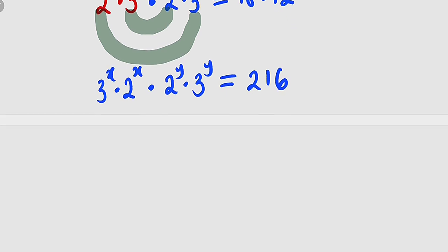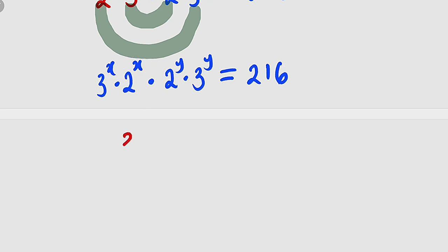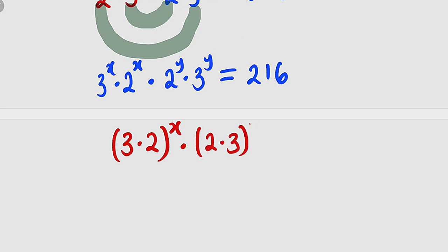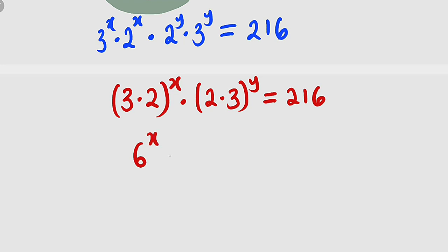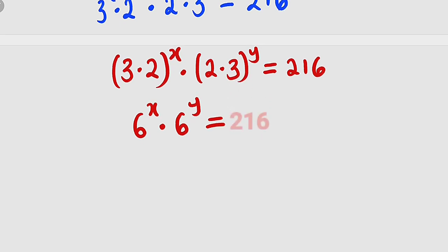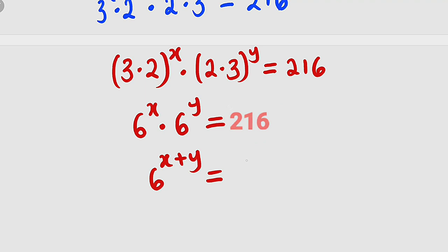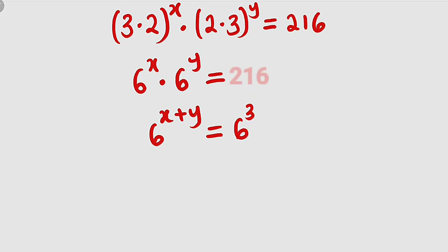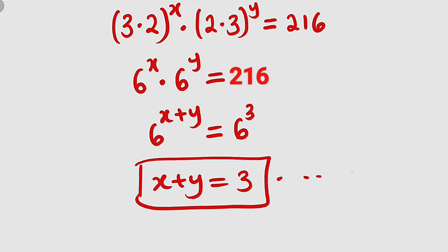Now let us apply one of the laws of indices. We have equal exponents, so we take 3 multiplied by 2 raised to the power of x, and equally 2 multiplied by 3 all to the power of y, equal to 216. This gives us 6 to the power of x multiplied by 6 to the power of y, still equal to 216. Applying the law that says multiply equal bases by adding exponents, we get 6 to the power of x plus y equal to 216, which is 6 to the power of 3. Since the bases are the same, x plus y must equal 3. This is equation number 3.